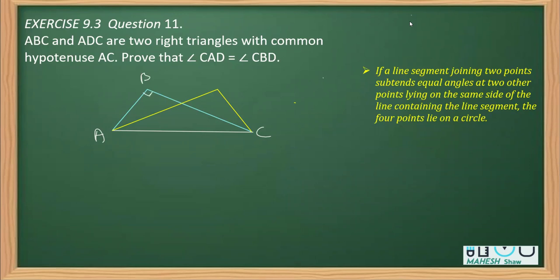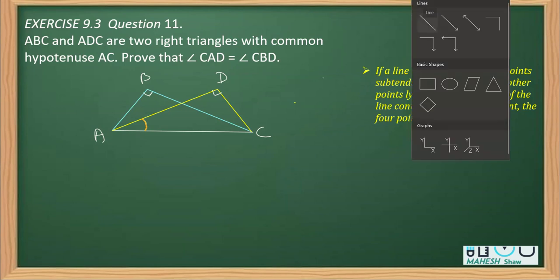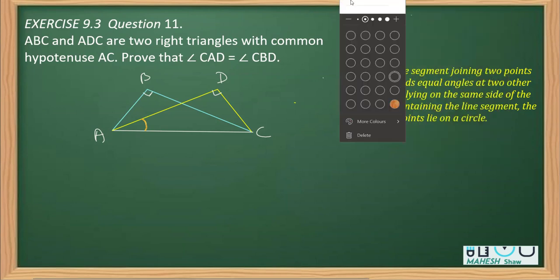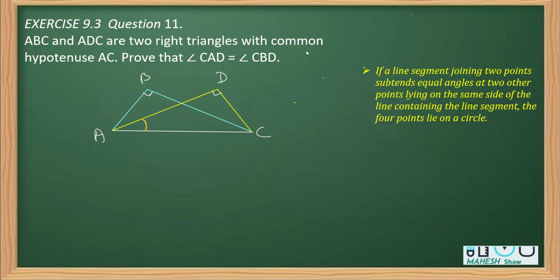One triangle has a 90-degree angle here, and as written, CAD and CBD are two right angle triangles. Now we have to prove two angles are equal — angle CAD and angle CBD. For that, we have to join B with D, which is part of the construction.